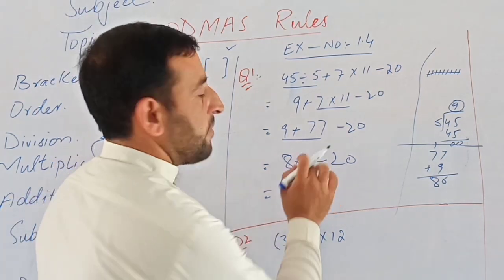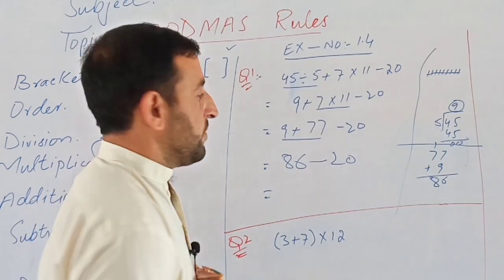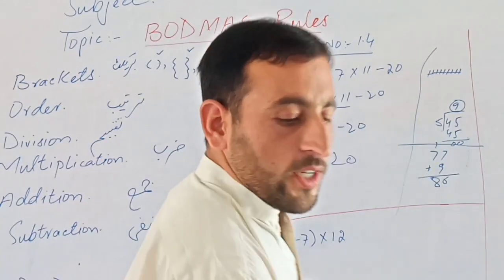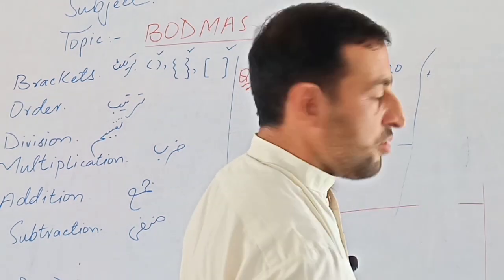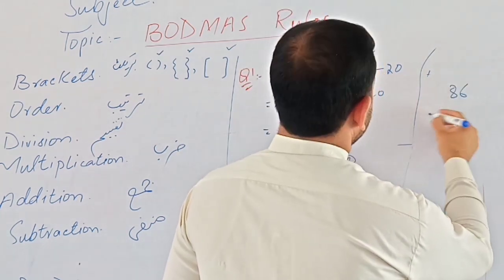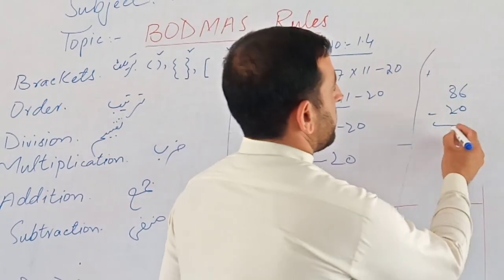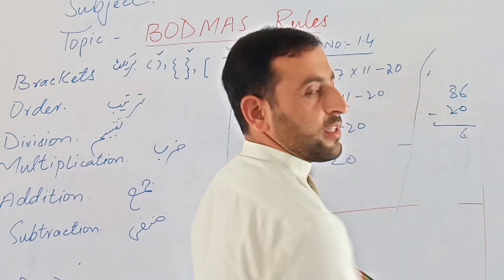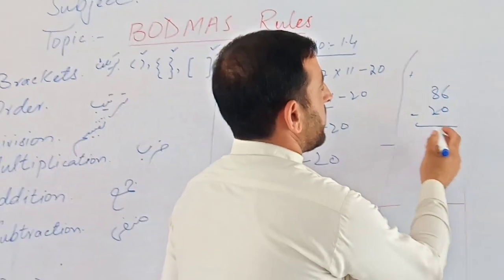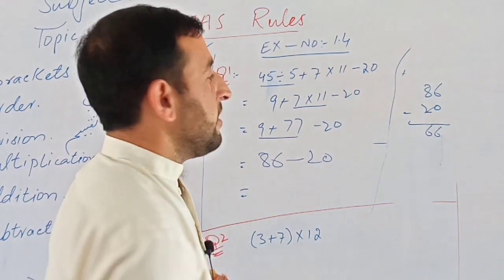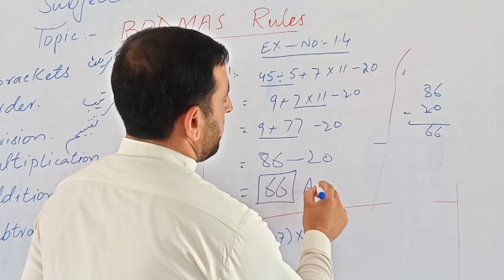Now we do subtraction. 86 minus 20. 8 minus 2 is 6, and 6 minus 0 is 6. So the answer is 66. That is the answer to question one.